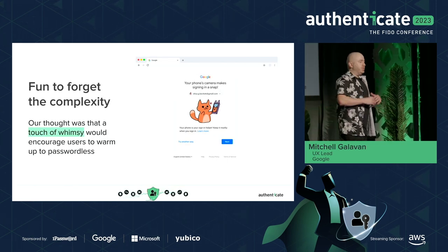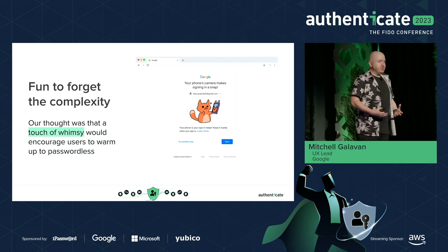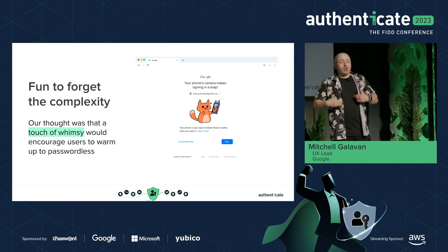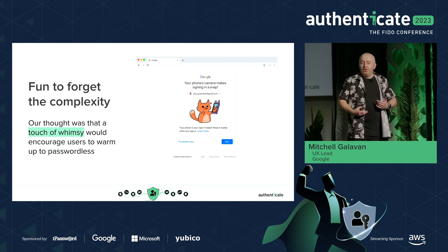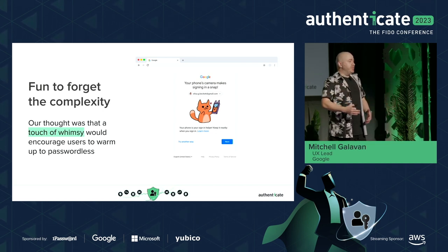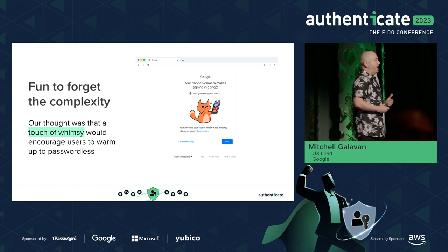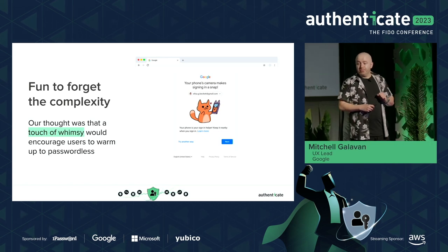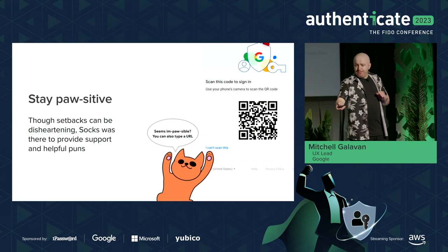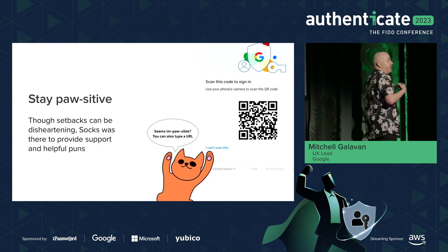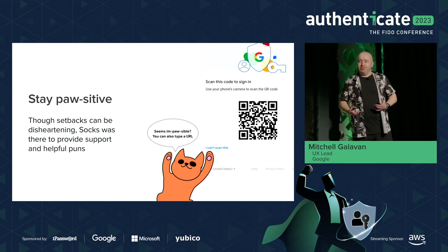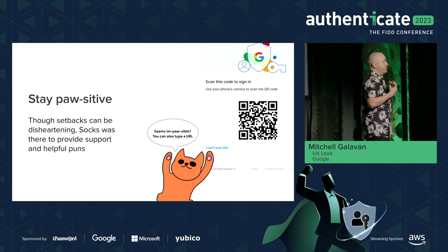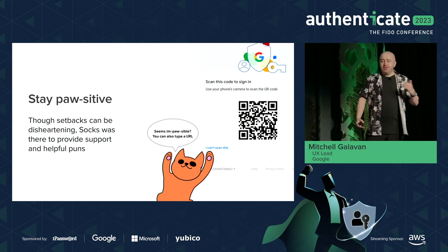What we were really trying to do was find a way to deal with the complexity of transitioning users to new authentication systems. Our core hypothesis with Socks the cat was to add a touch of whimsy — to make the whole experience of authentication warm, fun, familiar, and friendly. We really wanted Socks to convey helpful hints to users to guide them through the experience, even when there were setbacks or hiccups.